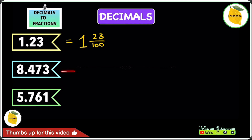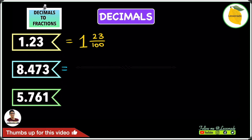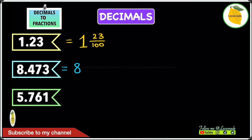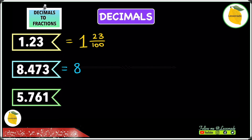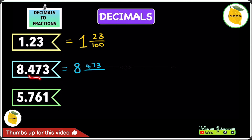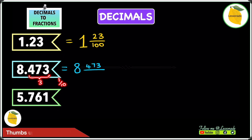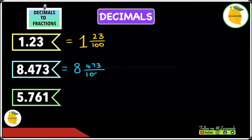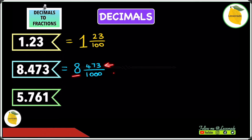Let's go on to the next one, which is 8.473. We do the same thing again — this is going to be a mixed number. The whole number is 8, so write the 8 down. The numerator is the number after the decimal point, which is 473. The denominator is based on the number of digits after the decimal point — there are 3 digits, and 3 digits after the decimal point is thousandths. So our denominator will be 1,000, giving us an answer of 8 and 473 over 1,000.